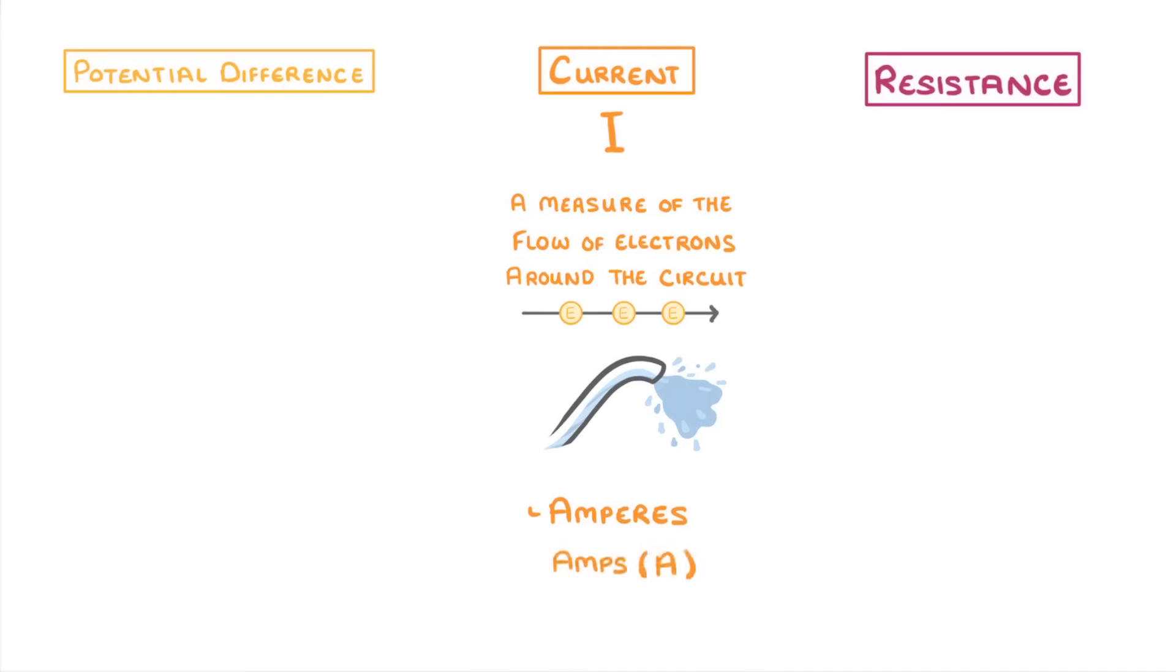Meanwhile, a potential difference, denoted by V, is the force driving this flow of electrons and is provided by the cell or battery. You can think of this as the pump that forces the water along the pipe. Another name for potential difference is voltage, and it's measured in volts.